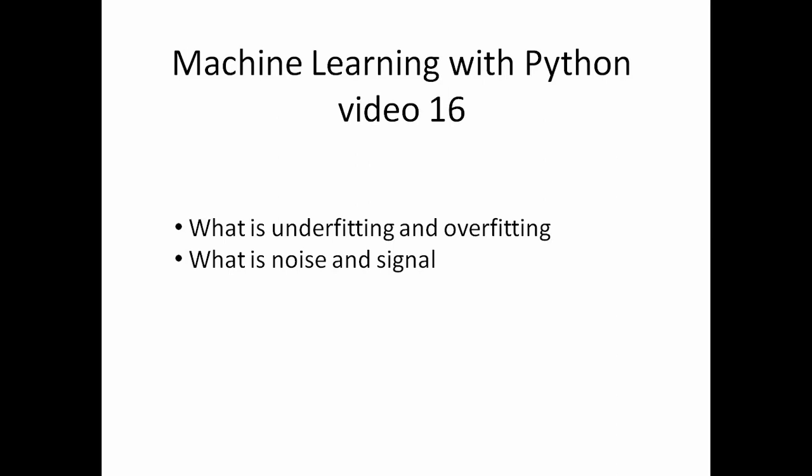Hello Python programmers. This is video 16 of a machine learning with Python video series. In this video we're going to cover what is underfitting and overfitting. To understand these two concepts you must be familiar with a few terminologies like what is noise and signal, which we'll cover here, and what is bias and variance. If you're not familiar with bias and variance, I have created a separate video — the link will be in the description.